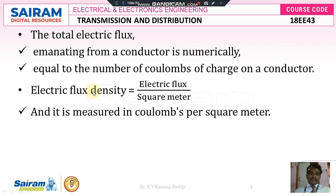The electric flux is nothing but emanating from a conductor which is numerically equal to the number of coulombs of charge on a conductor. Electric flux density is nothing but electric flux per square meter, and its units are coulombs per square meter.